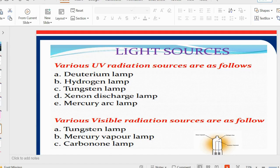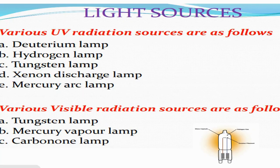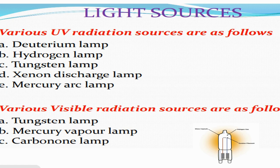If we talk about the different light sources, like what are the light sources which can be used. So, for UV radiation, then deuterium lamp, hydrogen lamp, tungsten lamp, any of the lamp can be used. If the visible radiation is going to be there, then tungsten mercury, or carbon arc.